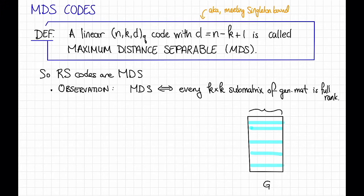Here this generator matrix is meant to be K by N. To see why this is true, notice that distance N minus K plus 1 means that a code can correct N minus K erasures. And in our picture over here, that looks like this.